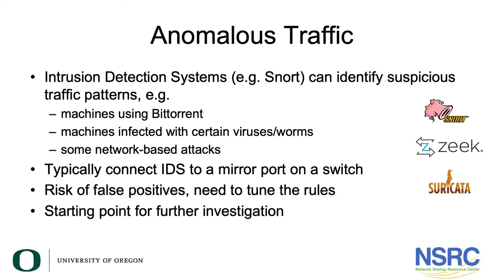Anomalous traffic is traffic that doesn't make sense — it looks different or generates a signature you haven't seen before. Intrusion detection systems such as Snort, Zeek, and Suricata can identify suspicious traffic patterns, machines using BitTorrent, machines infected with viruses or worms, and some network-based attacks. Typically you'd connect a machine running one of these systems to a mirror port, perhaps on a switch near your border. One major issue with these systems is the risk of false positives — they can generate many false alarms at first, and it takes time to tune them so the information becomes useful.